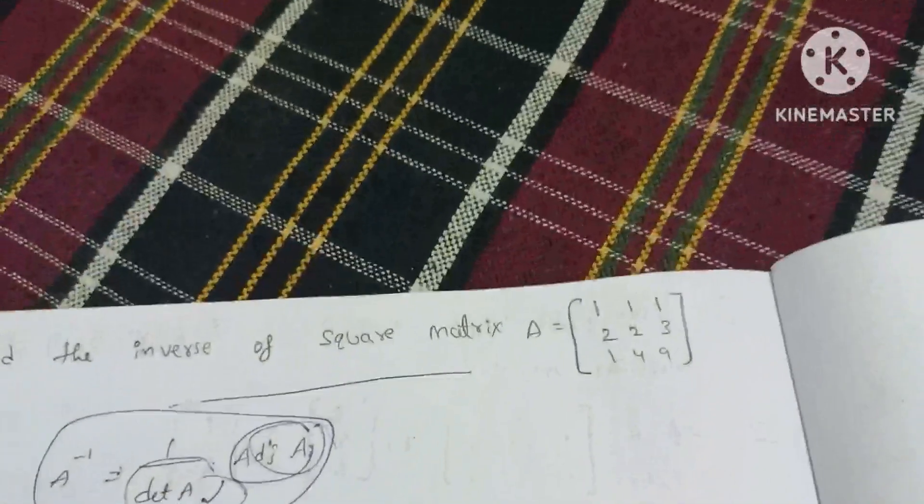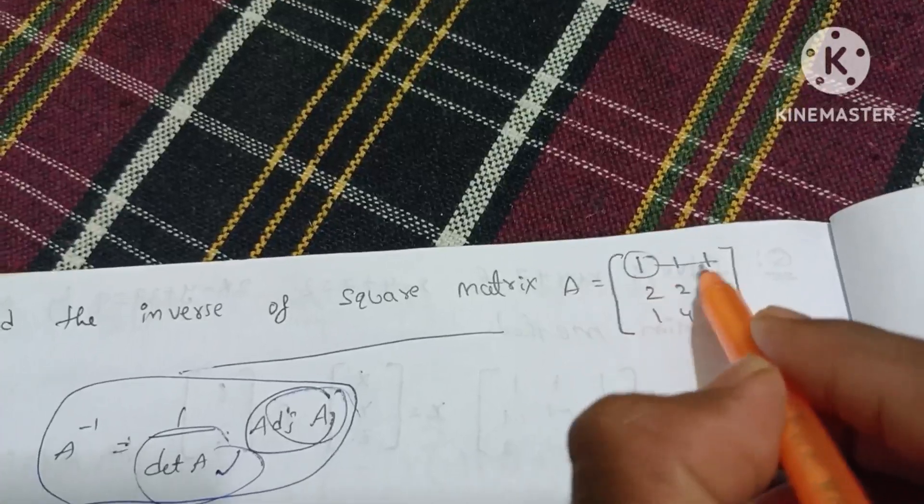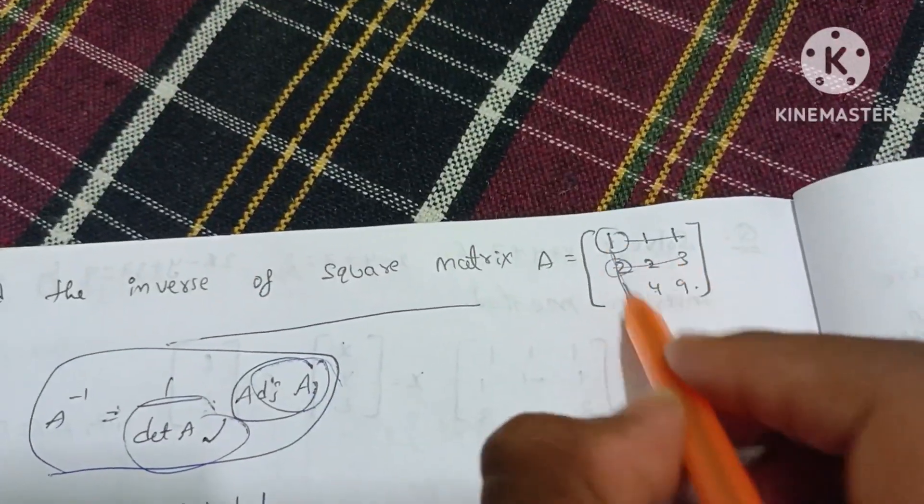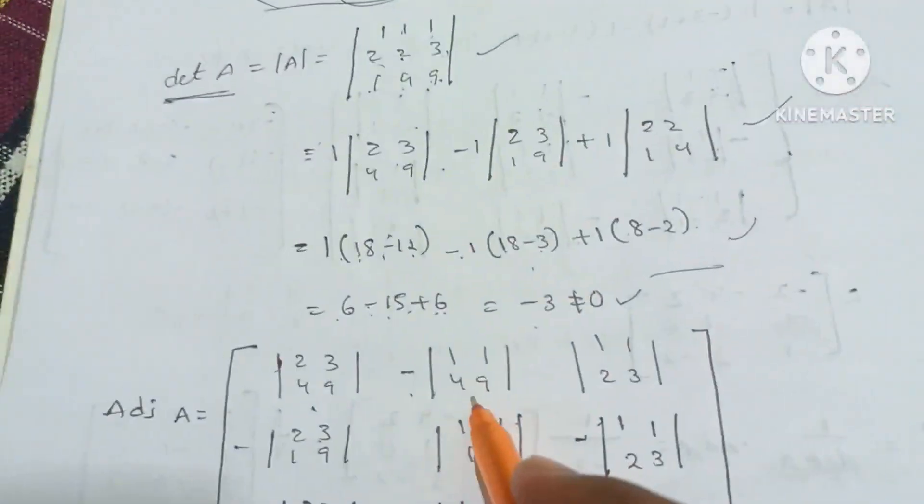Det A is equal to 1, 3, 4, 9 minus. Center element next. 2 into 1, 1, 4, 9. Next, 1 into 1, 1, 2, 3.